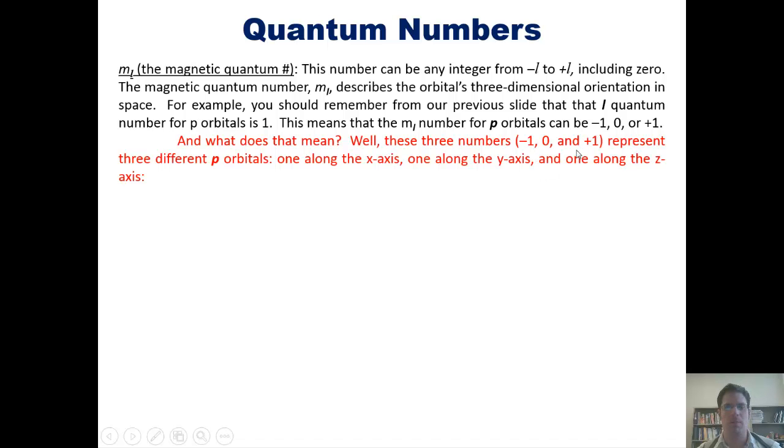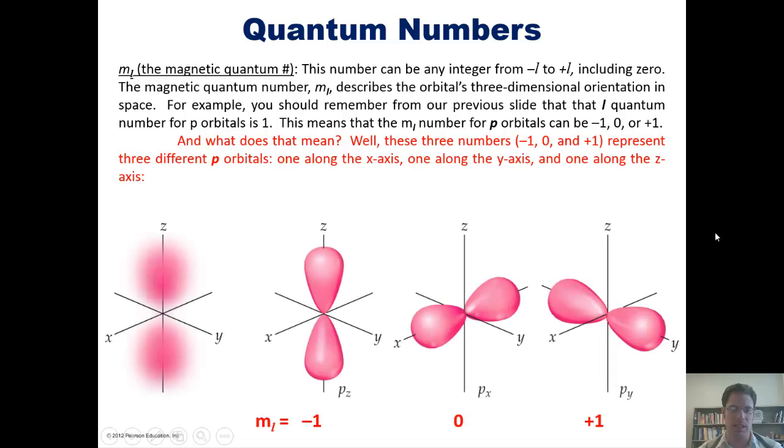these three numbers, negative 1, 0, and positive 1, represent the three different kinds of p orbitals. One along the x-axis, one along the y-axis, and one along the z-axis, as you can see in these pictures.